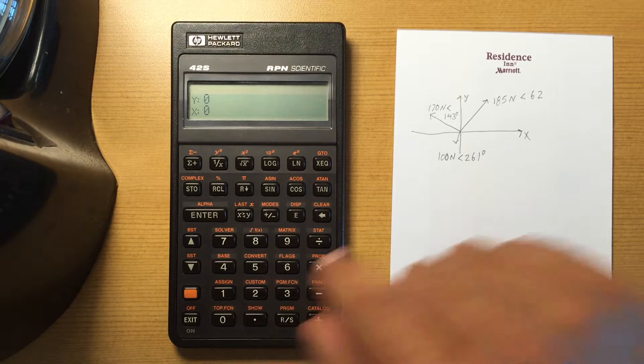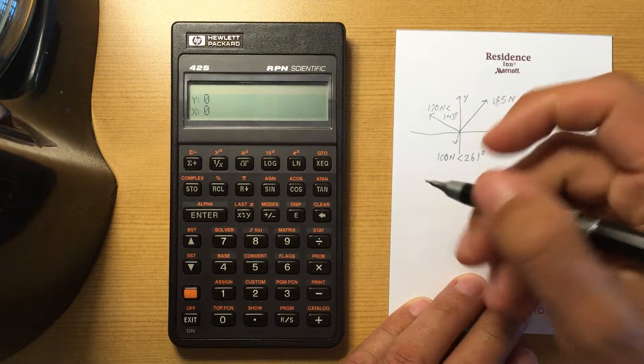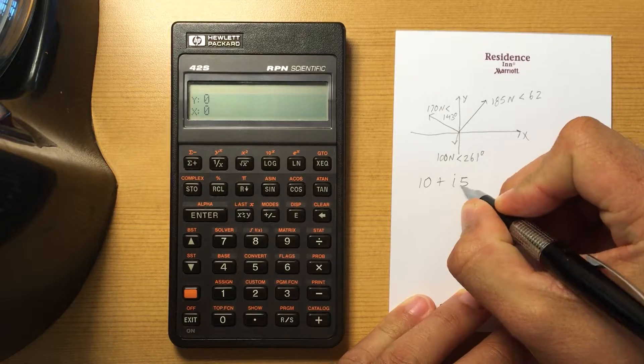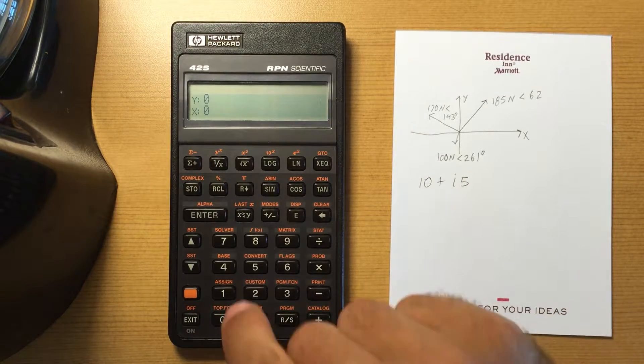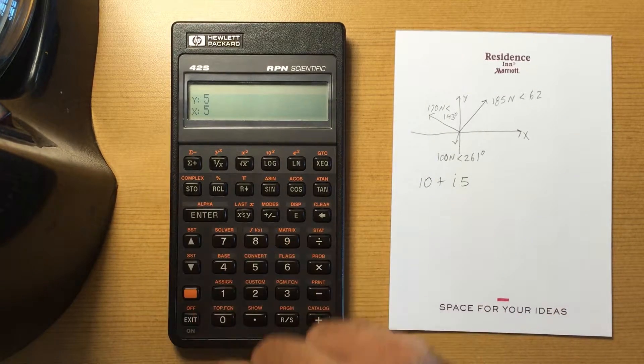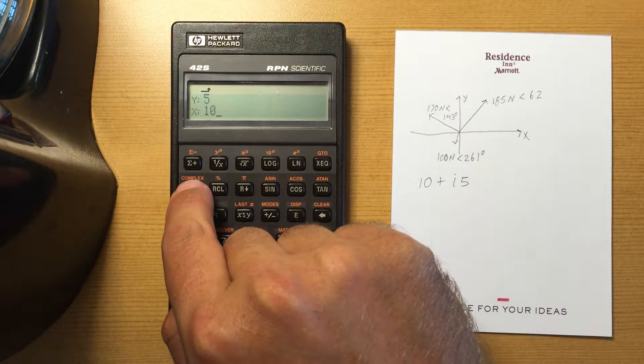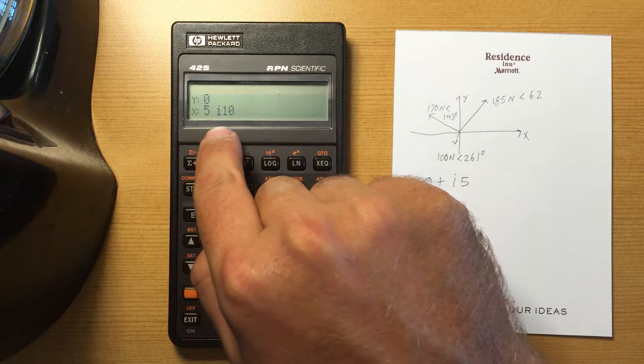So say I want to enter in 10 plus i5. I'd enter in the imaginary portion first, hit enter, enter in the real portion, and then do shift and change it to a complex number, and it shows me 5i10.